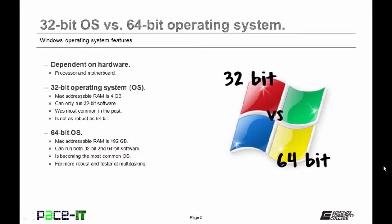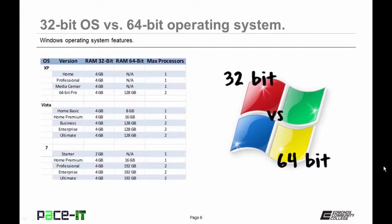A 32-bit operating system can only have a max of 4 gigabytes of RAM — that's all that's addressable — and you can only run 32-bit software. 32-bit operating systems were the most common in the past and are not quite as robust as 64-bit. 64-bit operating systems allow you to address a maximum of 192 gigabytes of RAM, and you can run both 32-bit and 64-bit software.